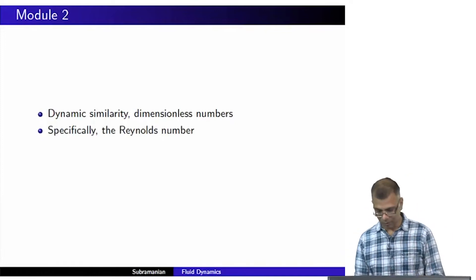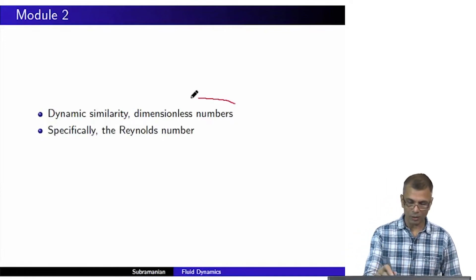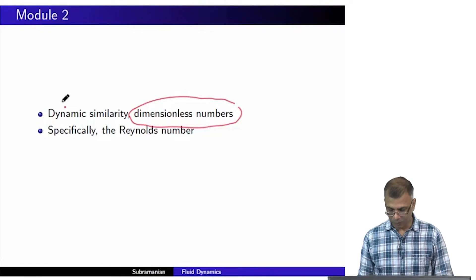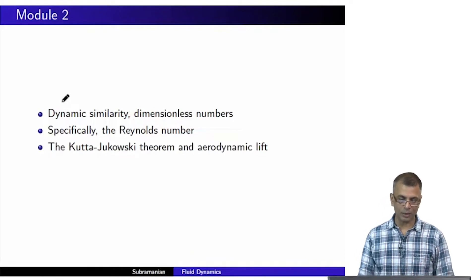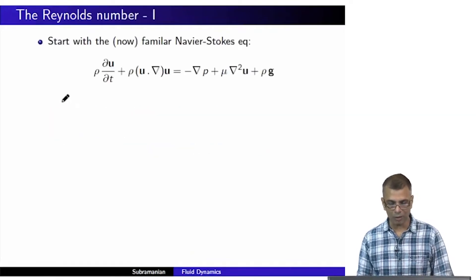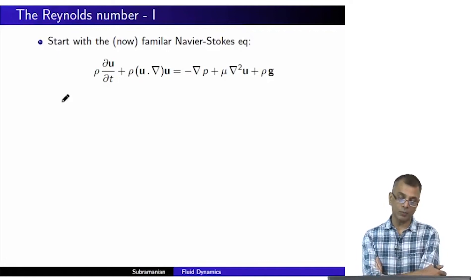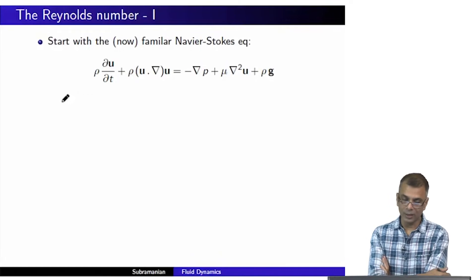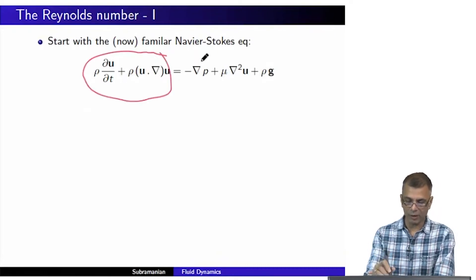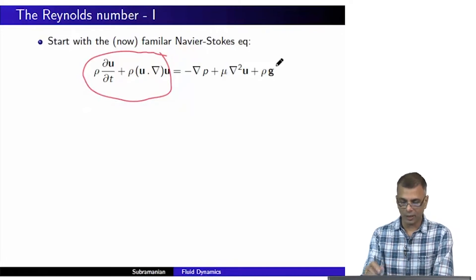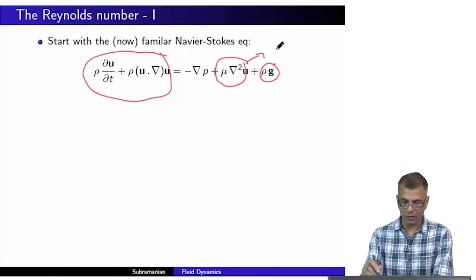We are talking about dynamic similarity and dimensionless numbers. We have not yet talked about dynamic similarity — we will do that now. Specifically, we will focus on the Reynolds number with a slightly different focus, and we will also talk about the Kutta-Joukowsky theorem and aerodynamic lift. We will start with the now familiar Navier-Stokes equation. This entire equation is essentially F = MA, where the different components are: the F due to the pressure gradient, the F due to body forces, and the viscous term.